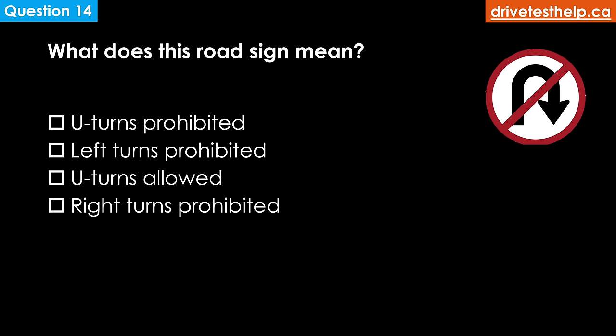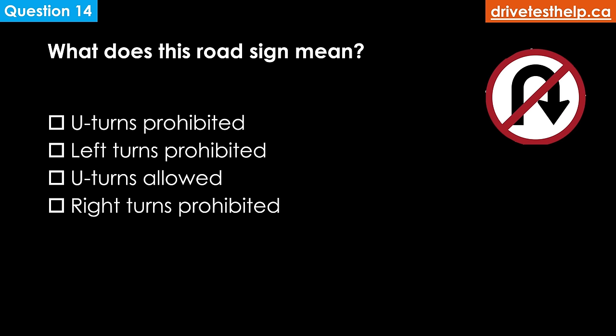What does this road sign mean? Options: U-turns prohibited; left turns prohibited; U-turns allowed; right turns prohibited. The correct answer is U-turns prohibited. A red slash inside a red circle means no — this regulatory sign indicates that U-turns are prohibited here.